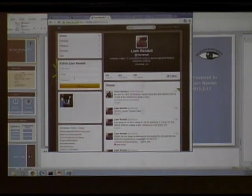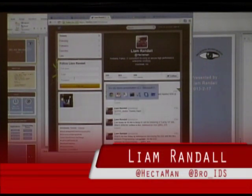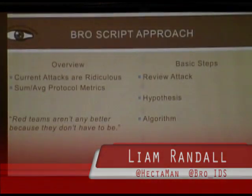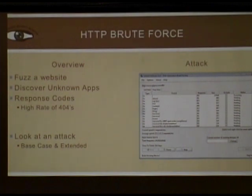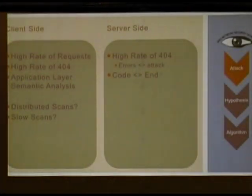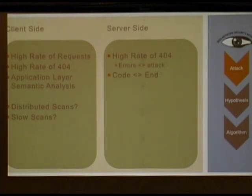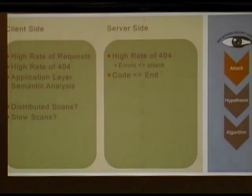I'm at hektamen on Twitter, bro_underscore_ids for the project. Take those simple metrics and think about things like HTTP brute forcing — it stands out like a sore thumb. Just monitoring HTTP status codes gives great intel: high 500 counts could mean your server is overloaded or there's a configuration problem; high 404s could indicate distributed scanning or a Dirbuster attack. In the next year we're going to start weaponizing all this intel — simple scripts that count something and then do something. We can all do that. It's really easy.